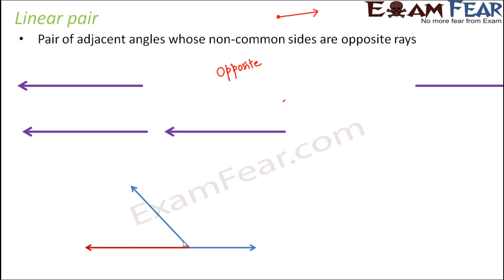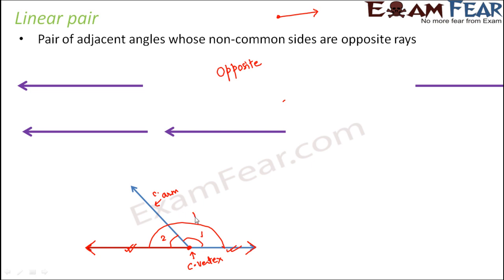Consider angle one and angle two. They are adjacent because they have a common vertex and a common arm. The non-common sides are the remaining two rays — one for angle one and one for angle two. These non-common sides are opposite rays, extending in exactly opposite directions. Two rays exactly opposite to each other form a straight angle, which is 180 degrees.